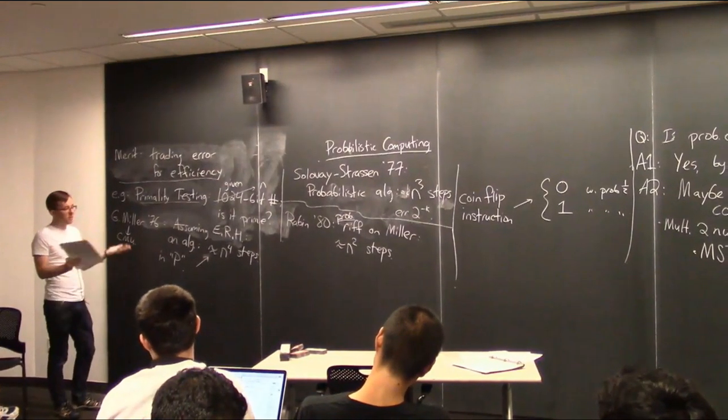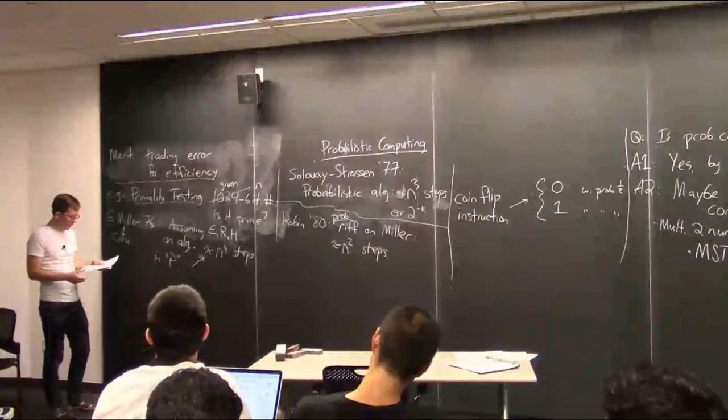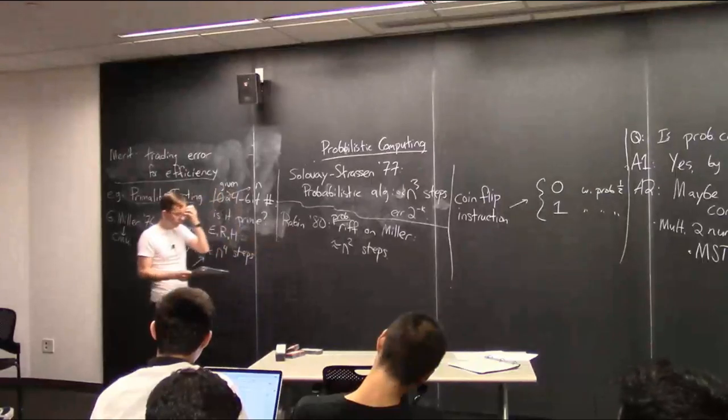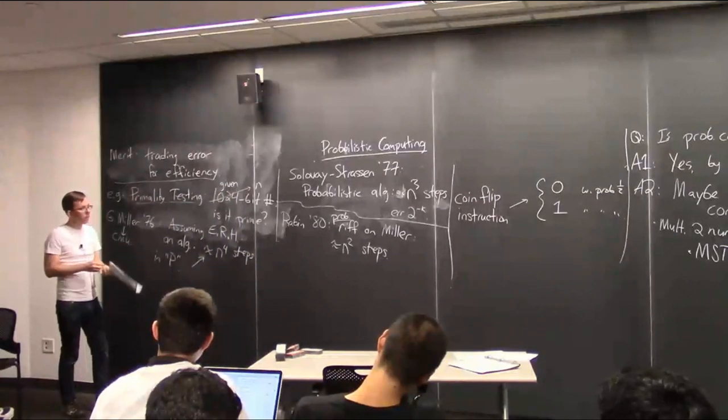Now it takes a millisecond instead of a second to determine if this huge number is prime. It's particularly amazing that they use probability to solve this inherently non-probabilistic task. There is some error rate attached — something like kn steps gives error 2 to the minus k. Maybe if you really want error 2 to the minus 500, you lose a factor of 500 again, but still pretty good.